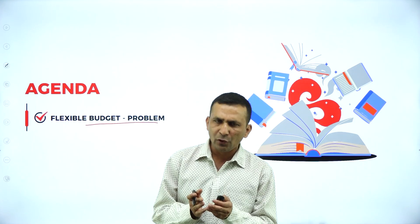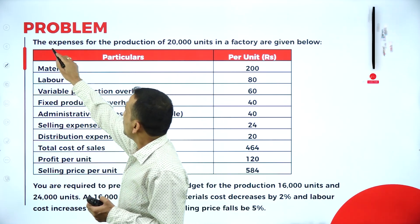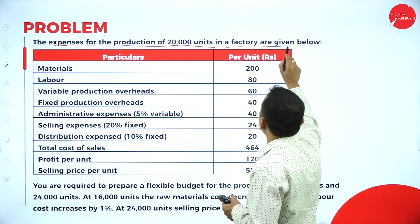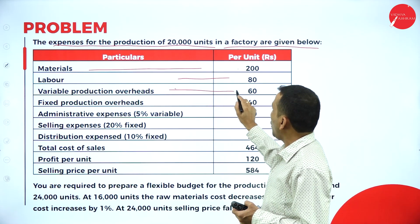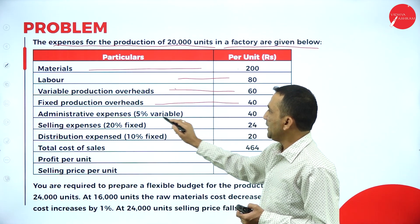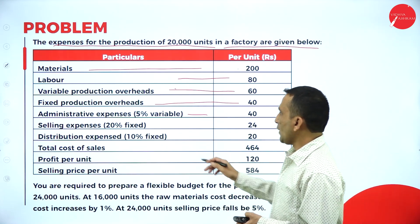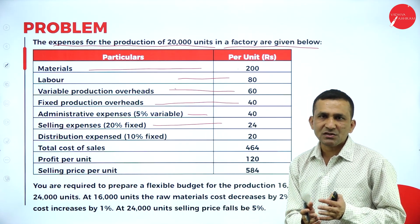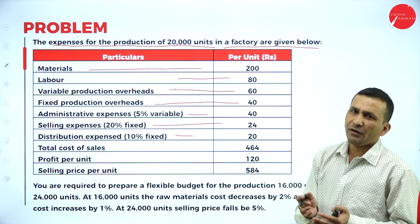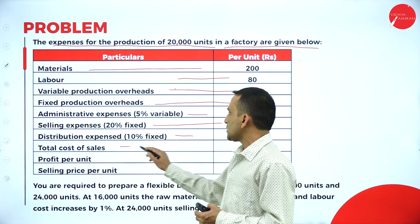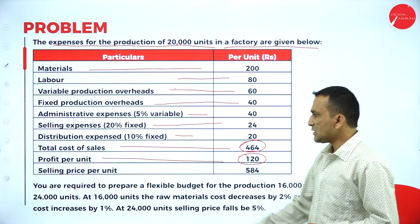In the last session we covered a problem based on the flexible budget, and today there is one more question to understand for much more clarity. The expenses for production of 20,000 units in the factory are: material 200, labor cost 80, variable production overhead 60, fixed overheads 40, administration expense 5 percent variable and 95 percent fixed, and selling expense 20 percent fixed and 80 percent variable.